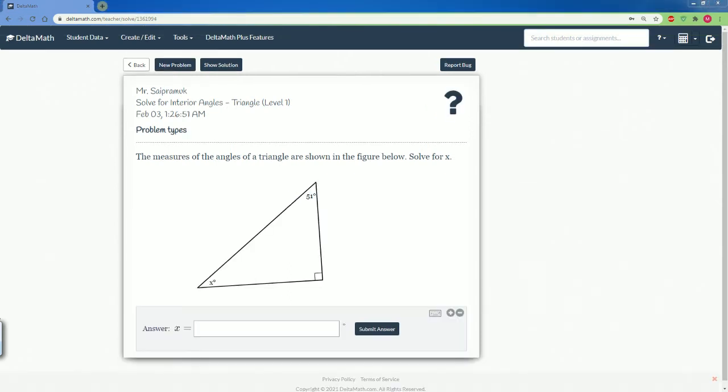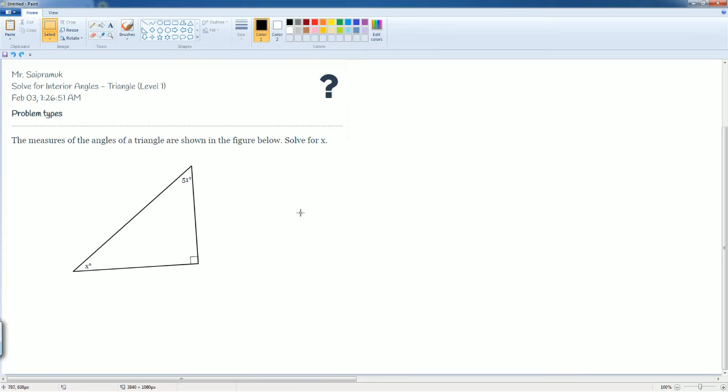Let's do another problem. Here we are asked again: the measurements of the angles of a triangle are shown, please solve for X. The X here represents the interior angle within a triangle. Note that the interior angles inside a triangle will always add up to 180 degrees.